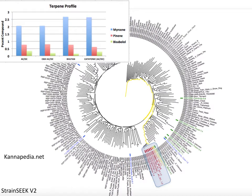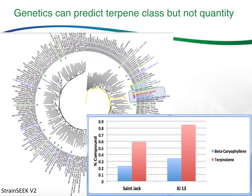Several hundred samples in the database have also been chemotyped. You can select on regions that look clone-distance apart and ask what terpene profiles are present. For example, you can see very consistent ratios of myrcene, pinene, and bisabolol among four different CBD lines named differently but apparently so genetically close they're probably clones, yet showing remarkable terpene consistency. You can also select other regions and see the same thing with terpinolene and beta-caryophyllene. The genetics here can predict the terpene class — we can't predict the quantity, but we can tell you whether it will be a beta-caryophyllene-dominant or terpinolene-dominant strain based on where it falls on the map.